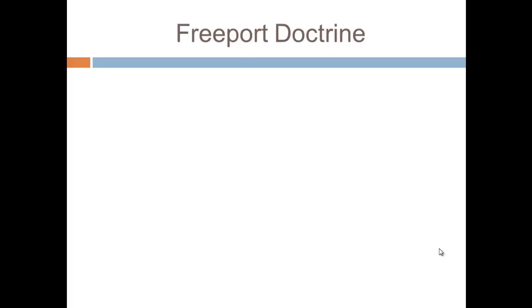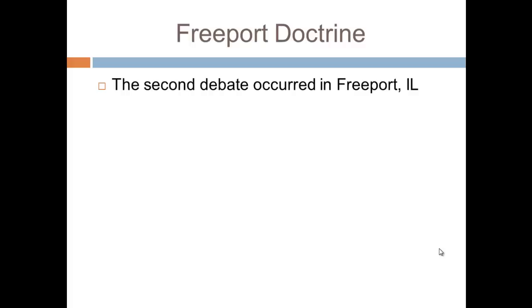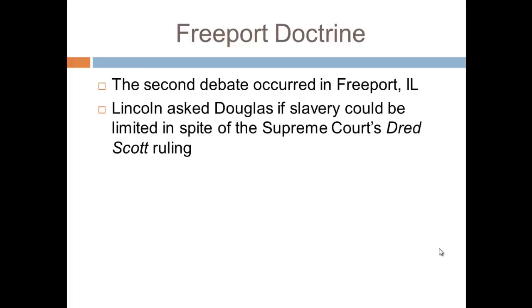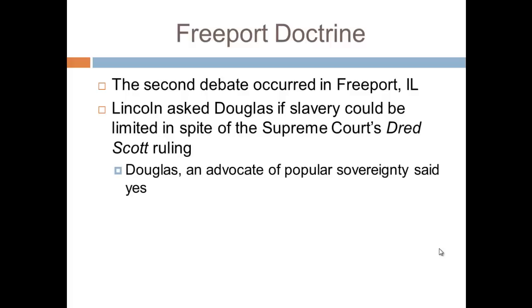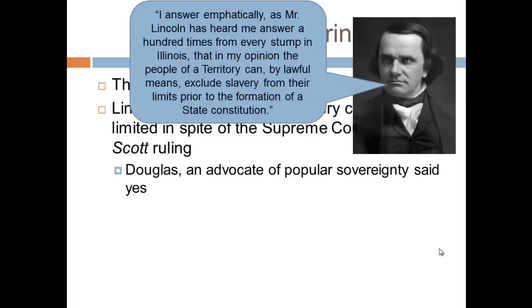Let's go to the Freeport Doctrine. The second debate occurred in Freeport, Illinois, and this has huge ramifications — please make sure you know this. Lincoln asked Douglas if slavery could be limited in spite of the Supreme Court's Dred Scott ruling. Lincoln essentially asked Douglas — the man who advocates popular sovereignty, or the belief that individuals living in a territory should decide if that territory should be free or slave — whether territories could go against the ruling. Douglas, an advocate of popular sovereignty, said yes.